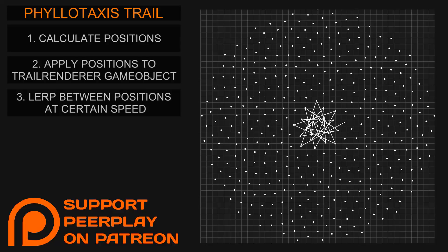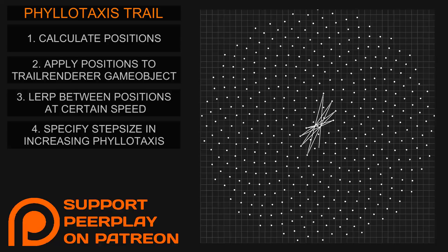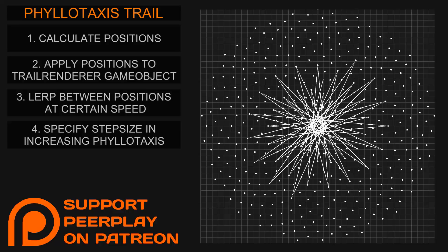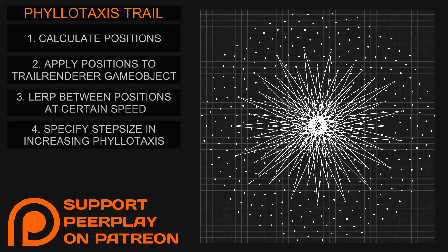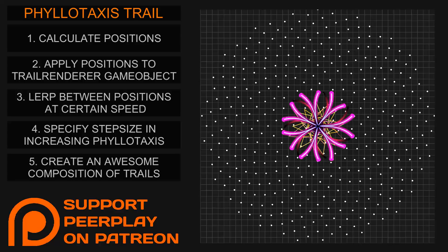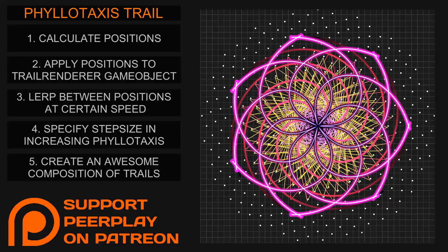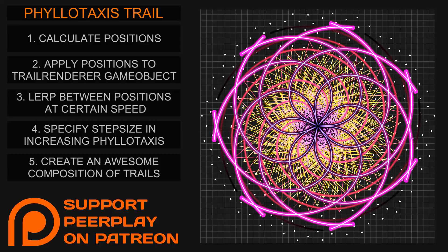The final thing we will add in this part is a step size. Based on the degree we've specified, we can then choose how many points it will skip to calculate its next position, allowing us to create different results based on the same degree. With all these features we will then be able to create a composition using multiple trail renderers, different colors, and applying different degrees.